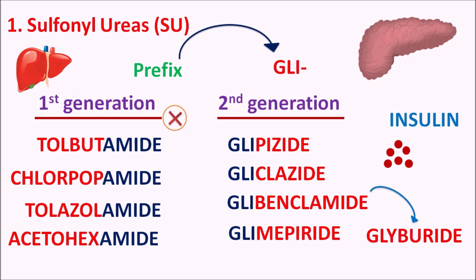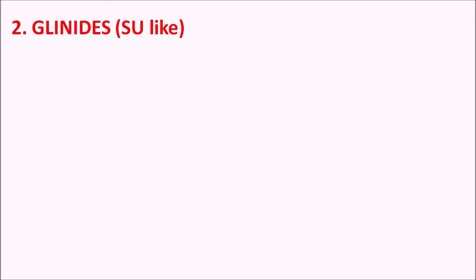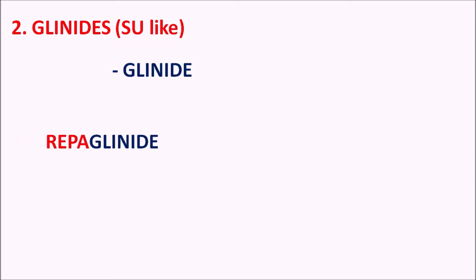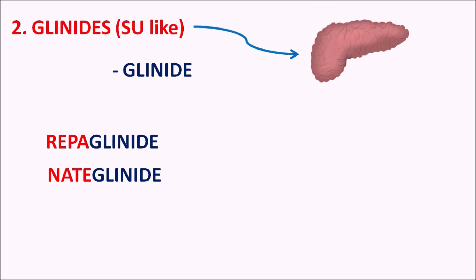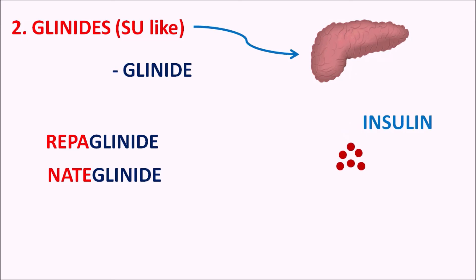Second are the glinides — sulfonylurea-like anti-diabetic agents with the suffix GLINIDE. Drugs include repaglinide and nateglinide. Though chemically different from sulfonylureas, they act similarly by increasing insulin release from the pancreas, which controls glucose levels.